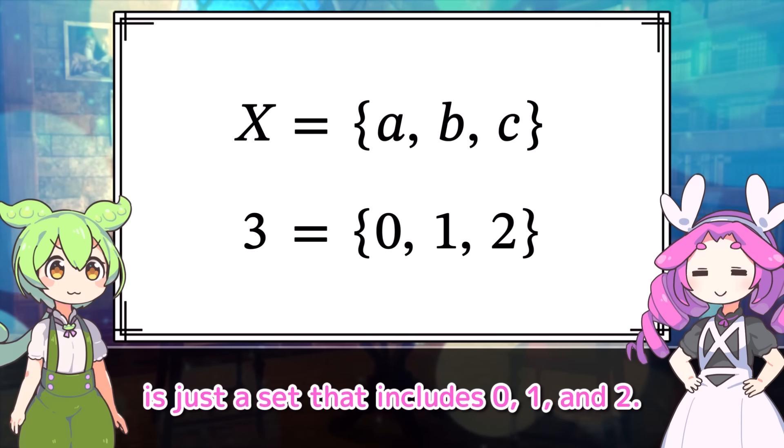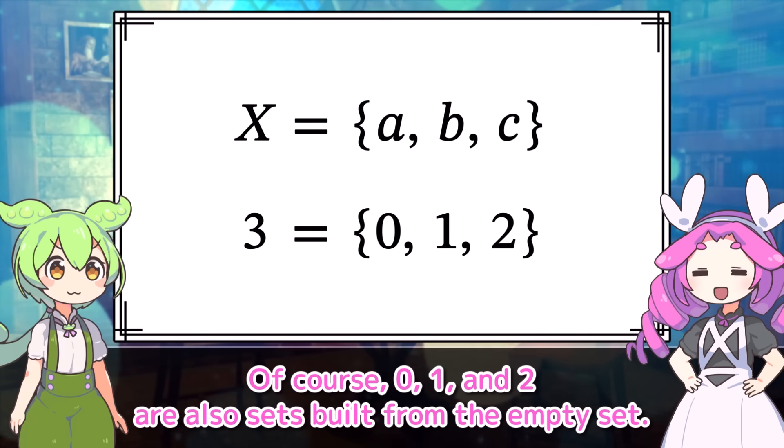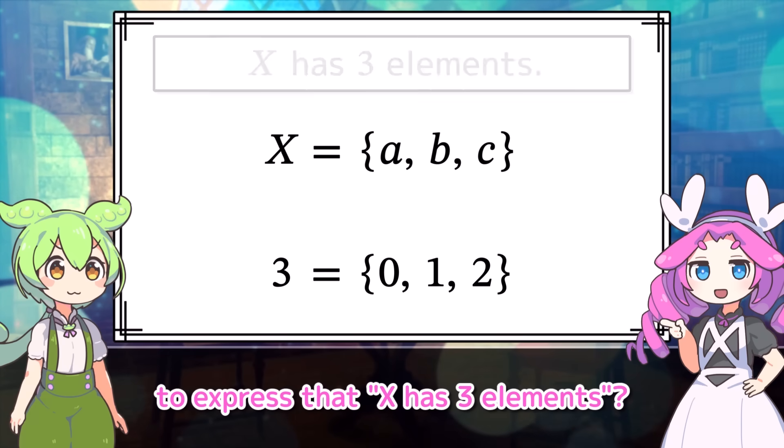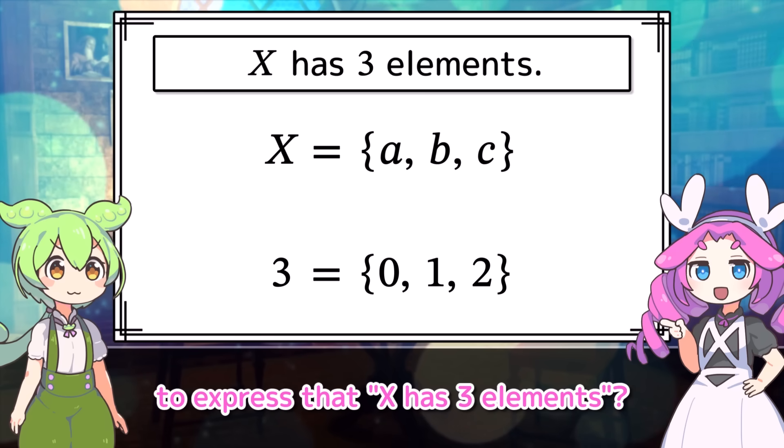Wait, we have to think about that too? Well, that's what it means to define numbers from scratch. The three we know is just a set that includes zero, one, and two. Of course, zero, one, and two are also sets built from the empty set.